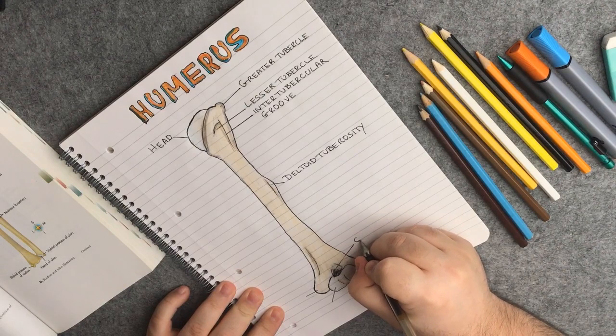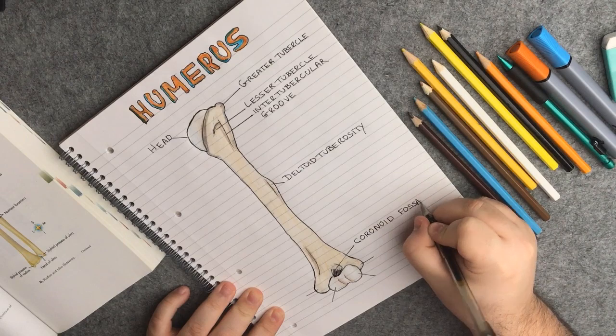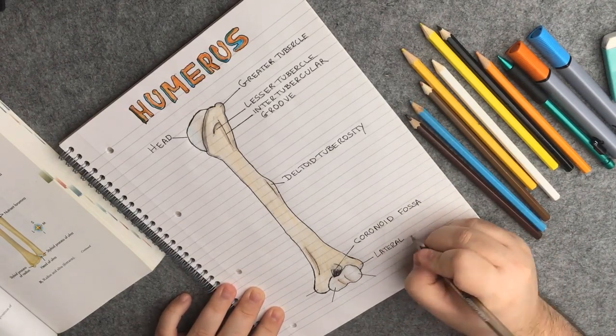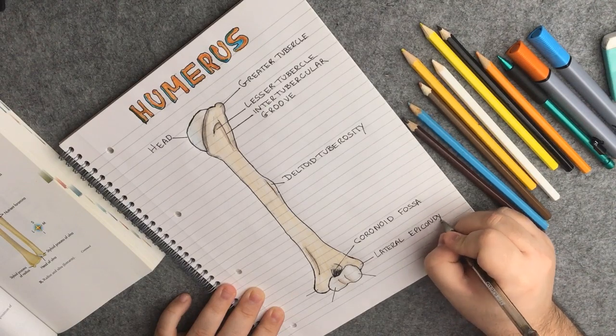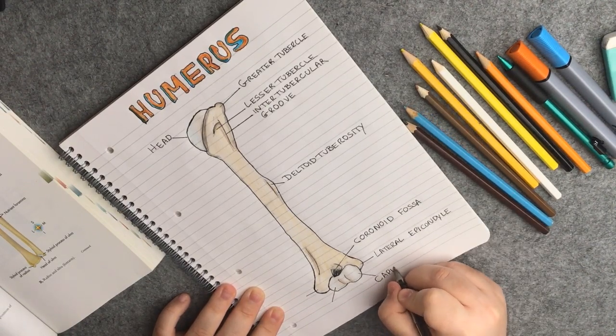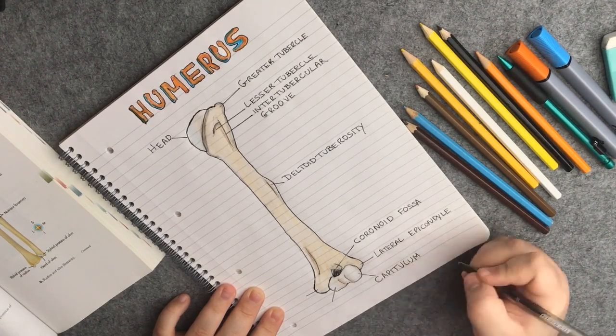The coronoid fossa, which is a depression where the coronoid process of the ulna goes into during flexion. We have the lateral epicondyle here on the right side of the image. The capitulum, which is a smooth, round eminence on the lateral portion of the distal articular surface of the humerus.